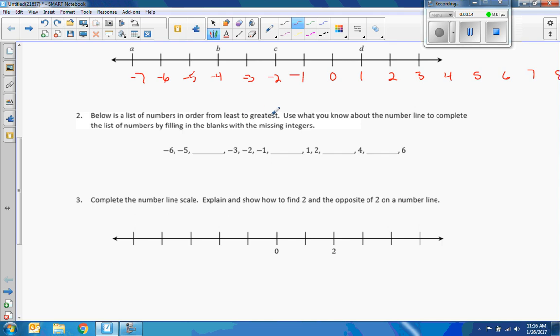All right, number two. Below is a list of numbers in order from least to greatest. Use what you know about the number line to complete the list of numbers by filling in the blanks with missing integers. So these are integers - positive and negative numbers, not including fractions and decimals and irrationals. So between negative five and negative three is negative four, between negative one and one is zero, between two and four is three, and between four and six is five.